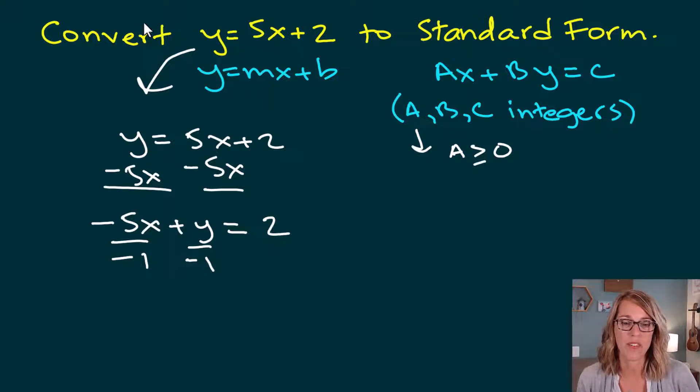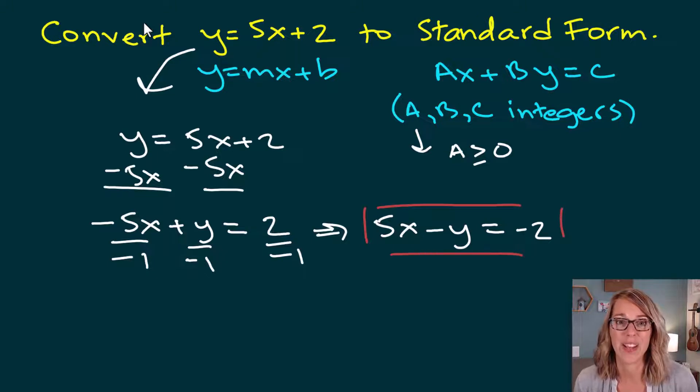Okay, so if I divide everybody by a negative 1, then I end up with this in standard form. And that's going to be positive 5x minus y is equal to negative 2. Let's go ahead and do a second example.